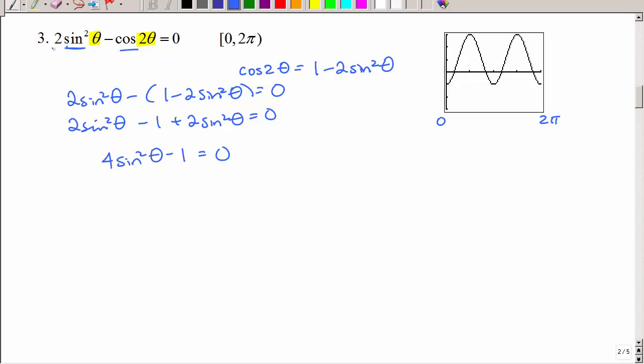So going back to my picture, this is between 0 and 2π. We have the curve, and we want to see when does it equal to 0, four times. So I should get four answers. Let's see if we can get there. So let's isolate sine squared by adding 1 and dividing by 4. Then we're going to take the square root of both sides, and I'm going to do it just like I've done in previous examples. I'm going to go ahead and split that plus or minus sign. So the square root of 1 fourth is plus or minus 1 half. Ah, those are nice, easy answers. Those are from my unit circle. I should have those memorized.